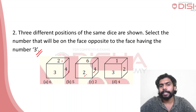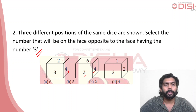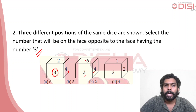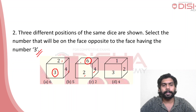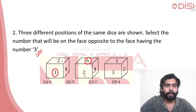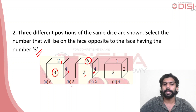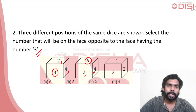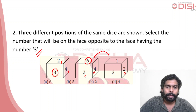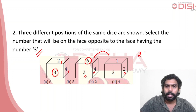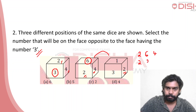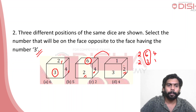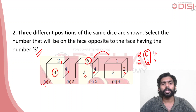Looking at the opposite face, we have two numbers. Looking at the two views, common number — putting it with 4. We have the remaining numbers: 2 and 1. From the two views, studying 2, 6, 4 and then 2, 3, 1 — the opposite of 3 is found. We study 3 and 4 views to get the answer.